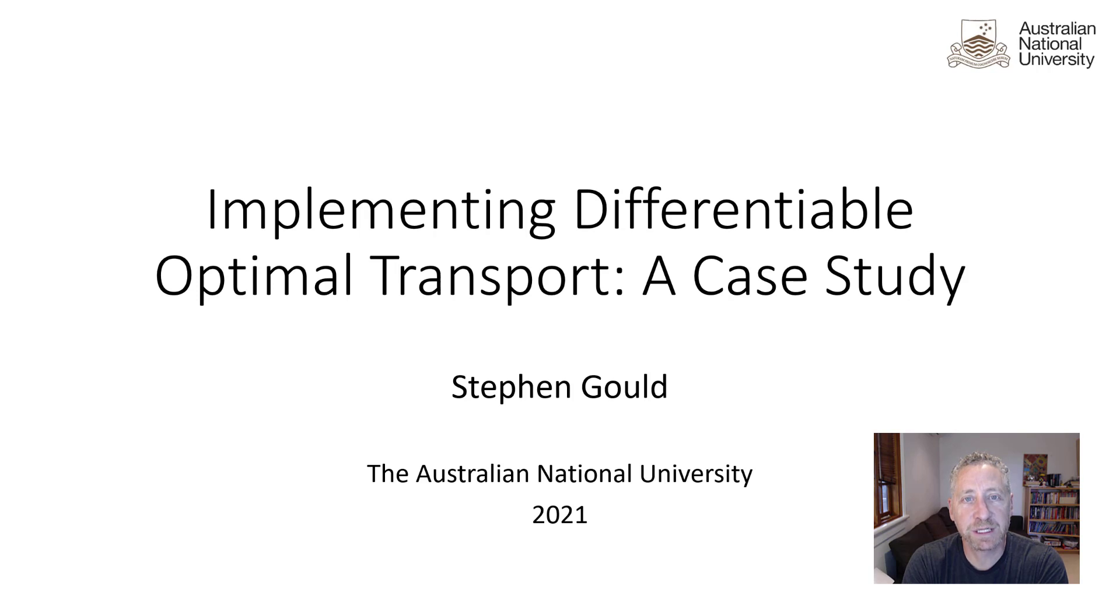The second method uses implicit differentiation based on deep declarative networks. It requires more work to implement, including some fancy linear algebra tricks, but is fast and very memory efficient.